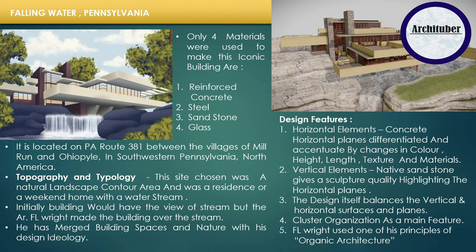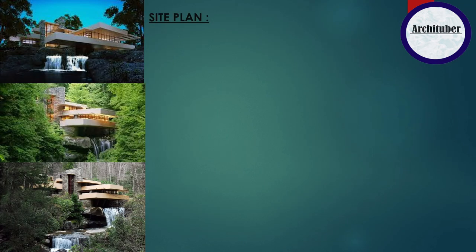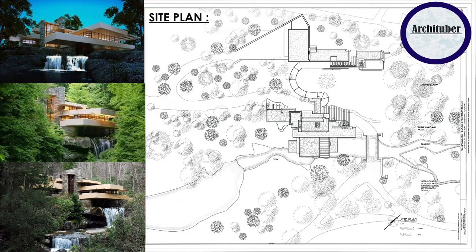Now let's study the designing and planning of the building. Looking at the site plan, the site has the view of Bear Run River. One can tell that Wright has tried to achieve harmony with nature. Level also plays an important role in this design. If you look at the plan, there are many cantilever projections and terraces at different levels.